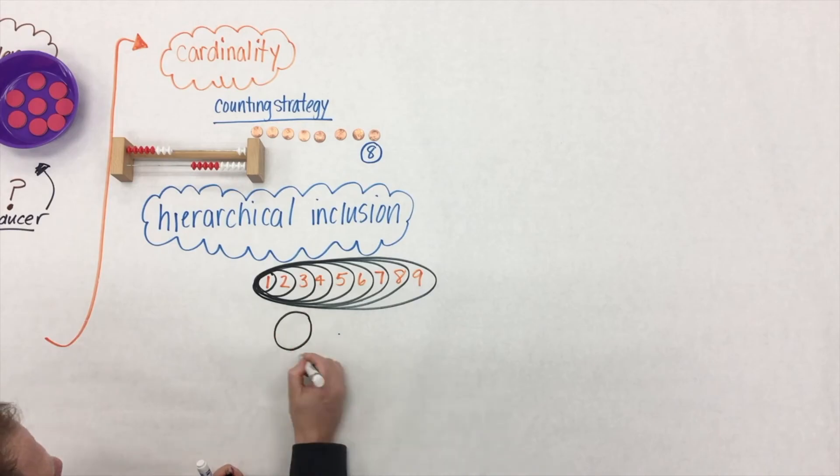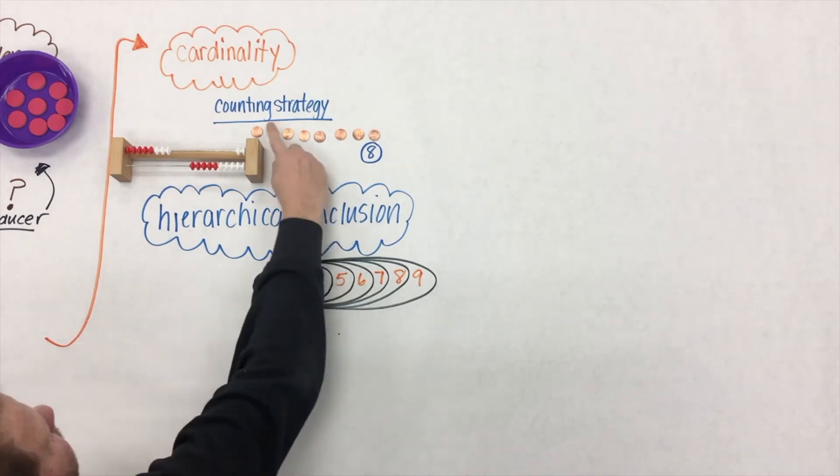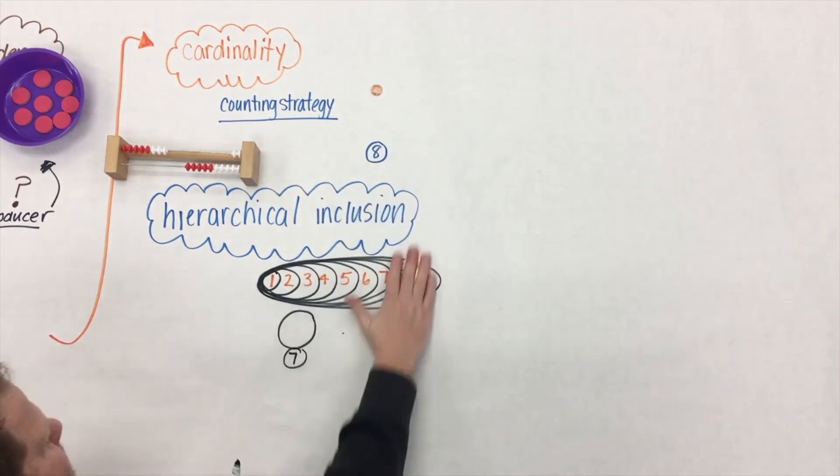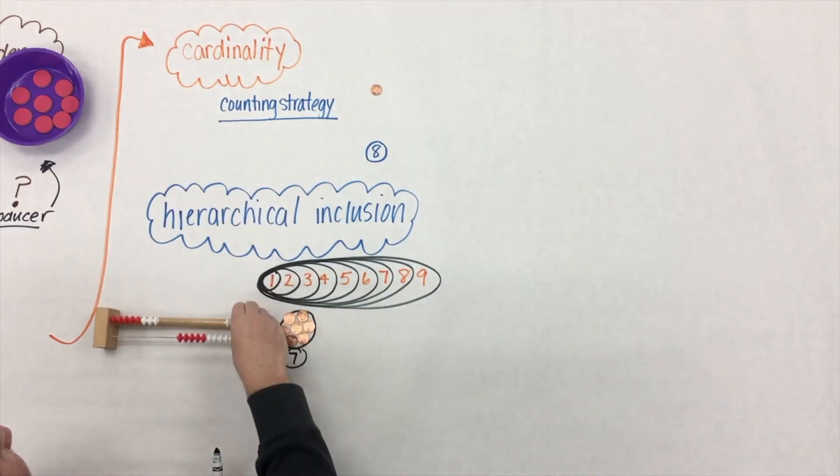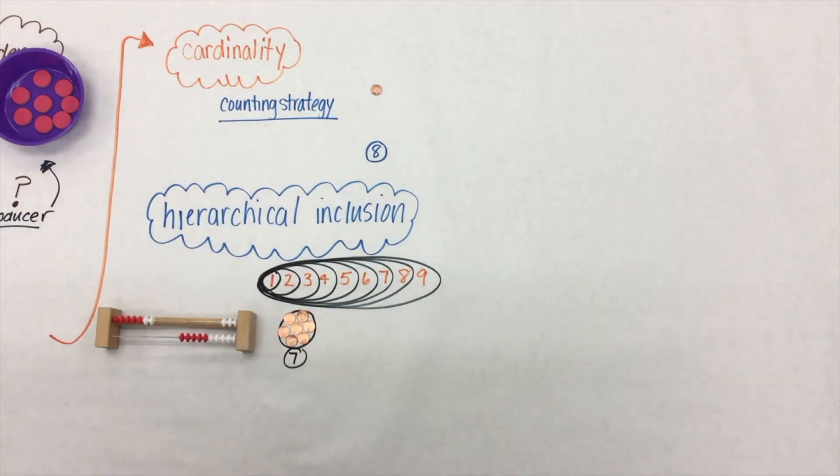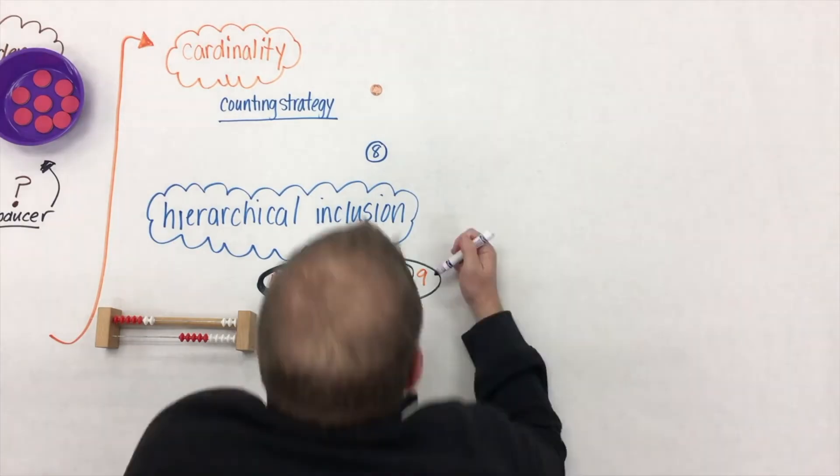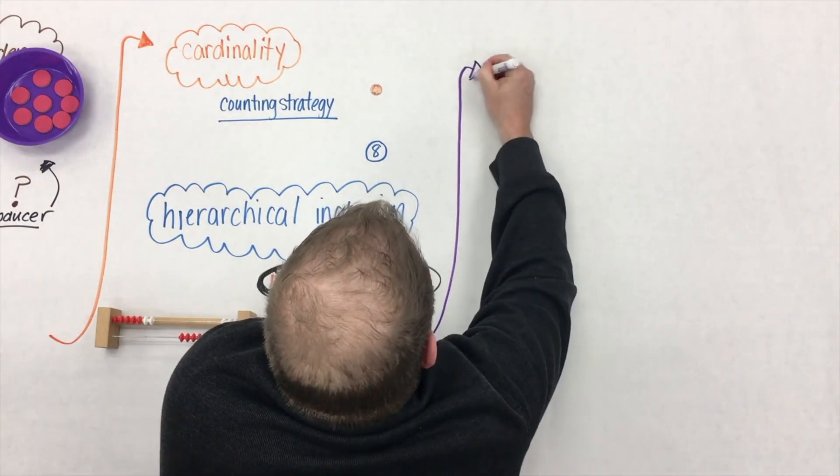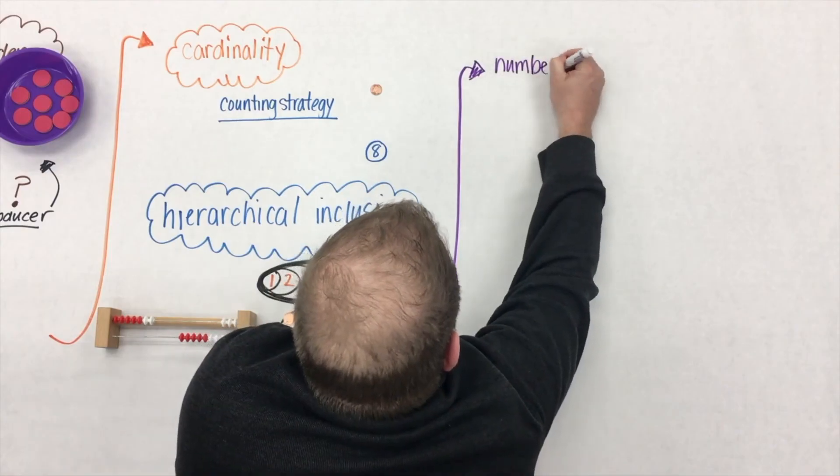So if we ask students to put seven inside this circle, do they need to count out seven pennies? Or do they just remove one and drag the set into the circle? The same idea with the Rekenrek. Do students count out seven? Or do they just know to remove one because seven is nested within the eight?